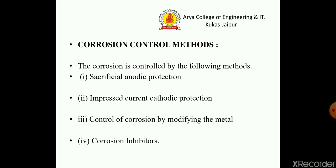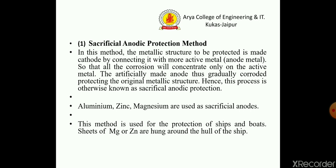Corrosion control methods: corrosion is controlled by the following methods — first, sacrificial anodic protection; second, impressed current cathodic protection; third, control of corrosion by modifying the metal; and last, corrosion inhibitors. We will discuss the first two in detail.